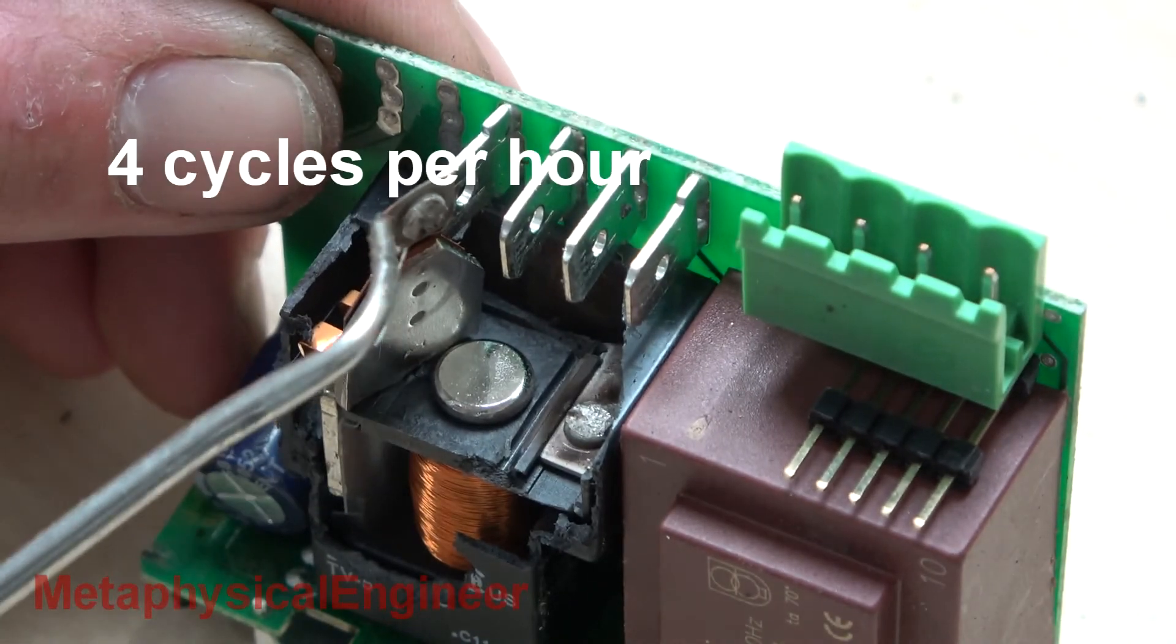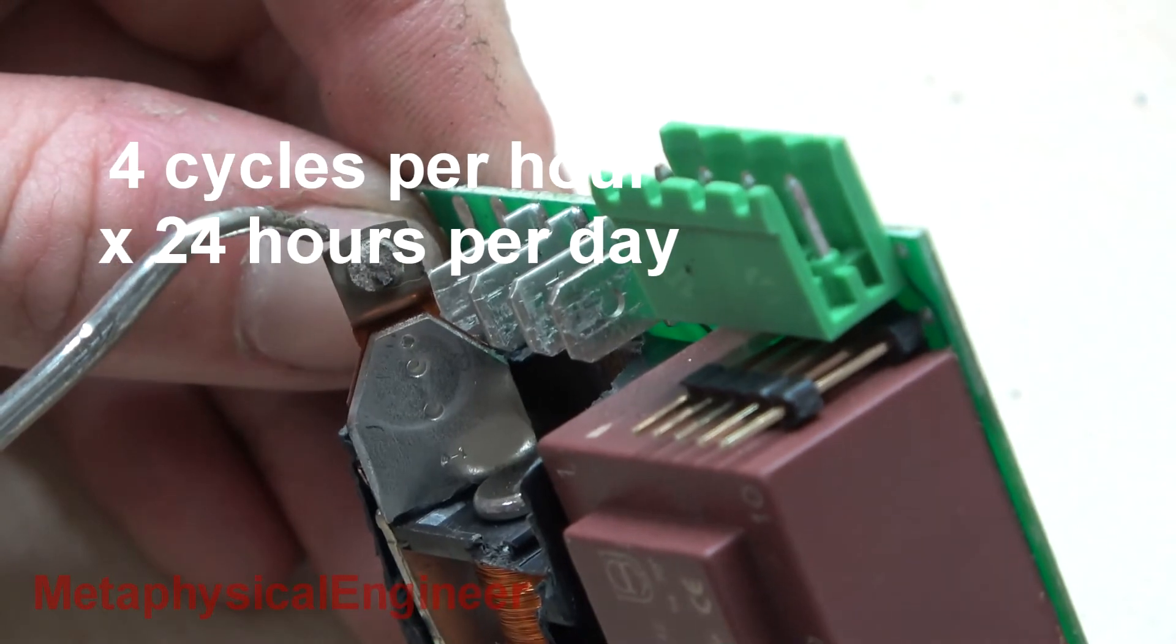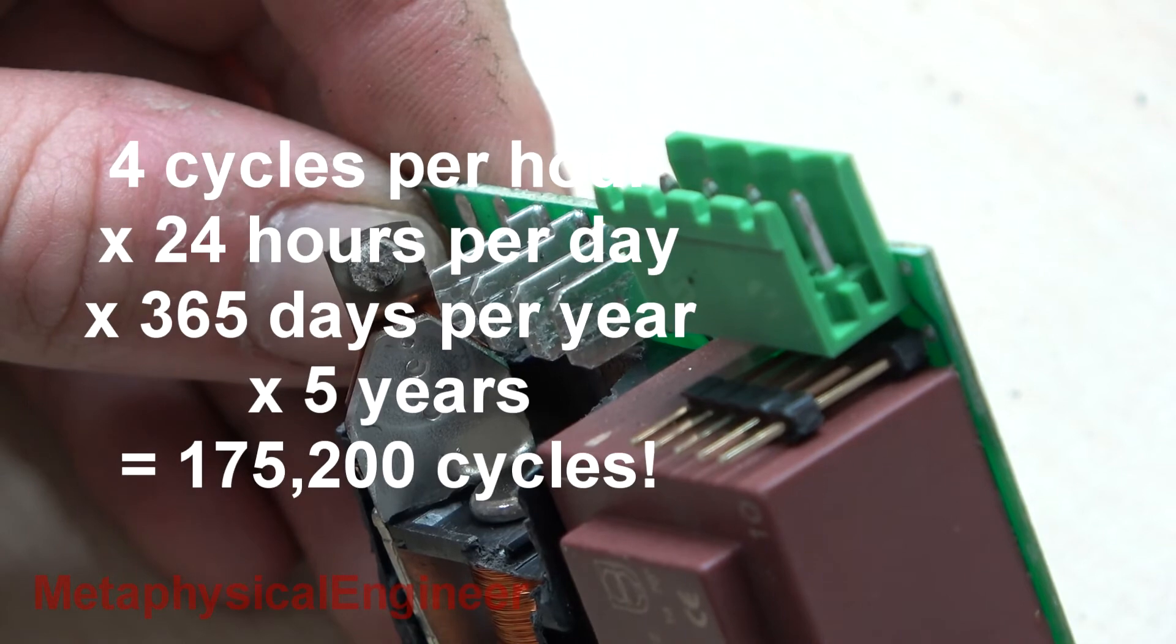If that cooler cycled an average of 4 times per hour, which is on the low side for small coolers, 24 hours a day, 365 days a year, times 5 years, there's over 175,000 cycles.